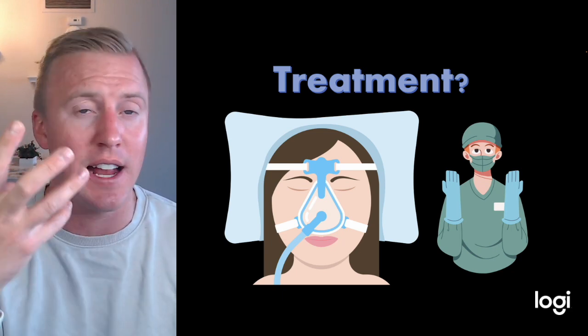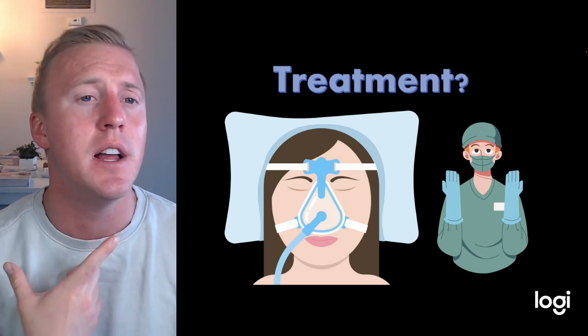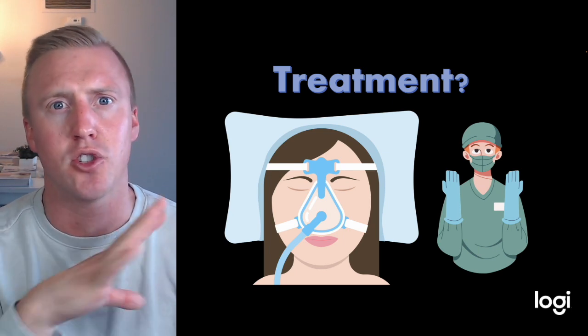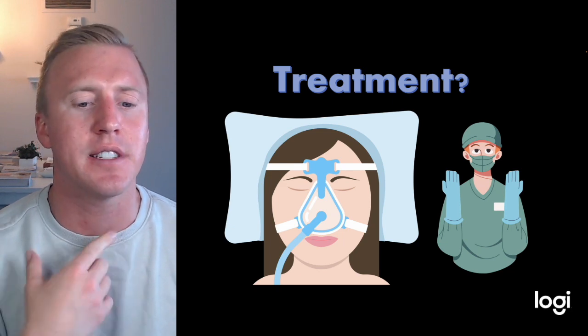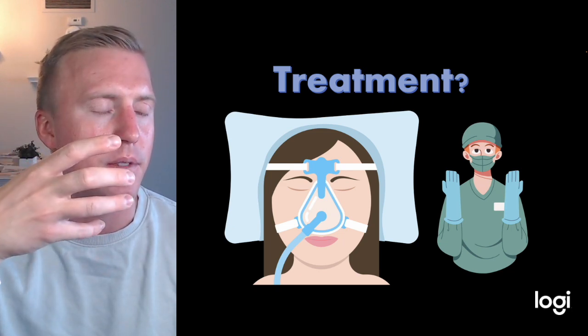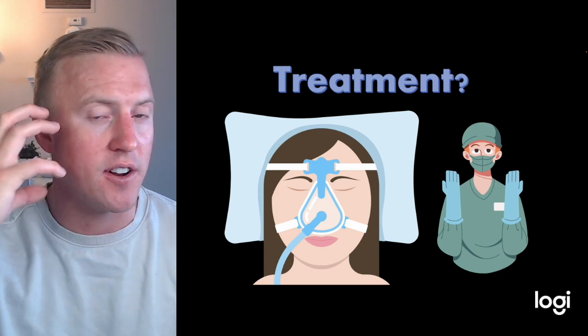Surgeries that can be done: tonsils, anything to help with the obstruction in general. Ultimately, a trach is for super severe cases if they have cardiac dysrhythmias that are really bad. That obviously will totally bypass this whole pharynx area.